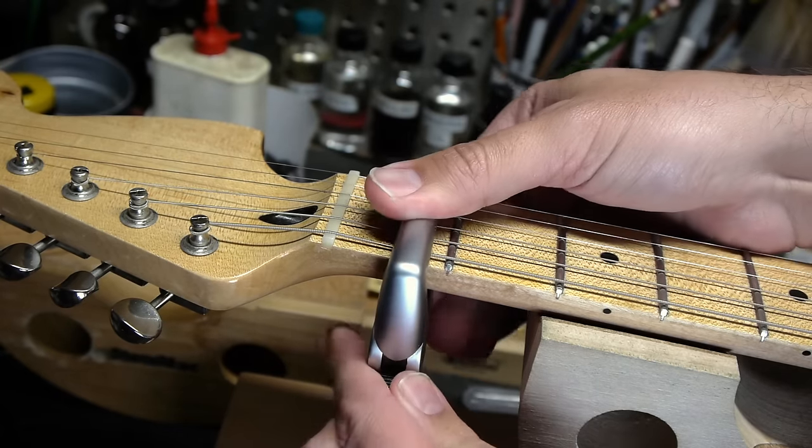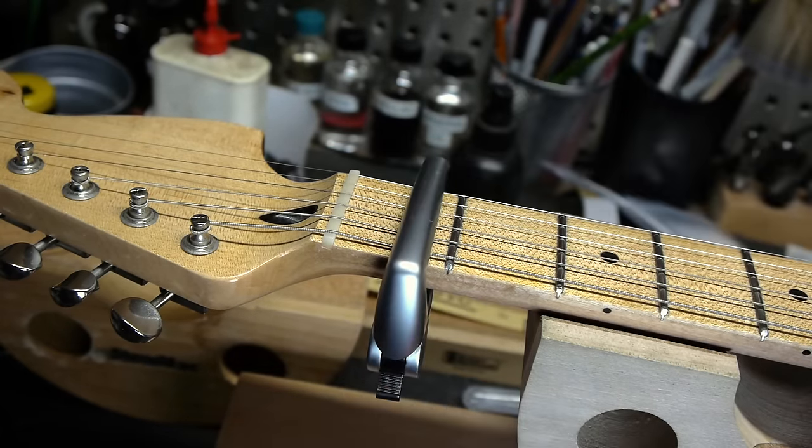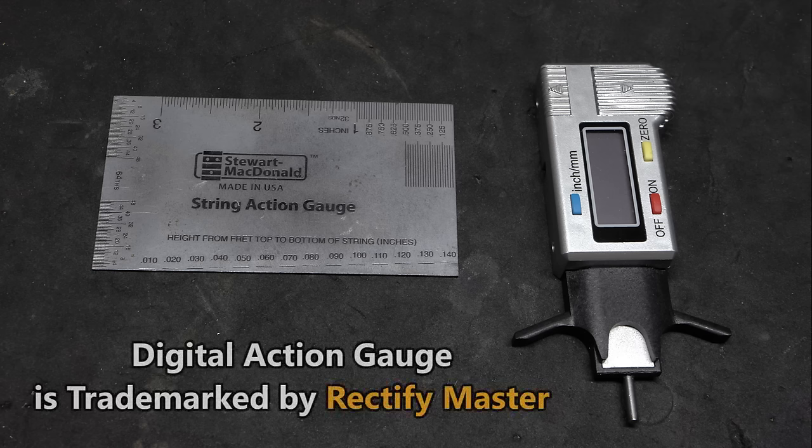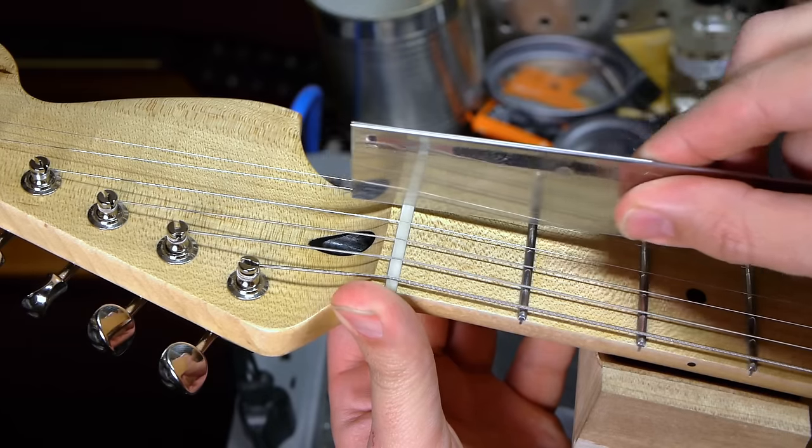And set your preferred action for each individual string at the twelfth or seventeenth fret. A string action gauge or a digital action gauge are my preferred measurement tools.